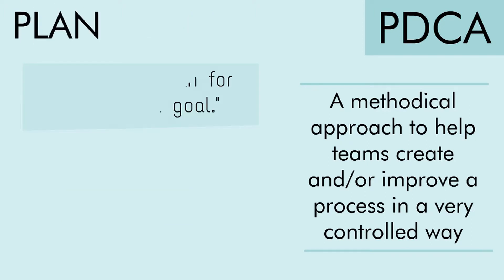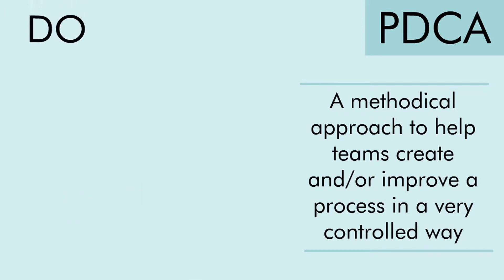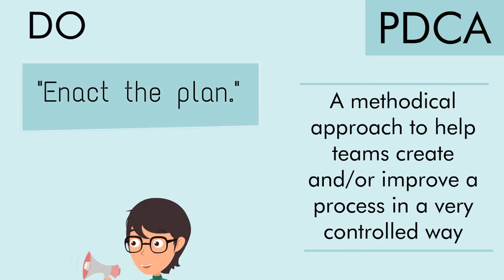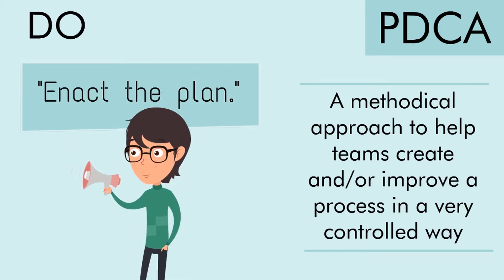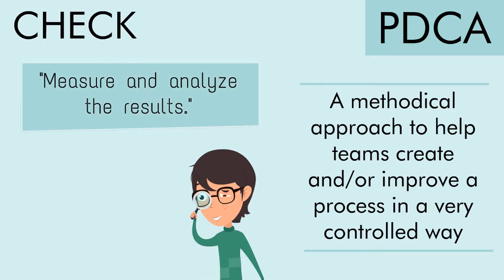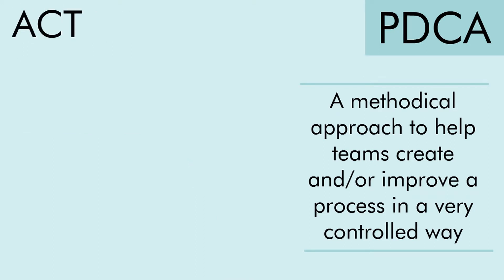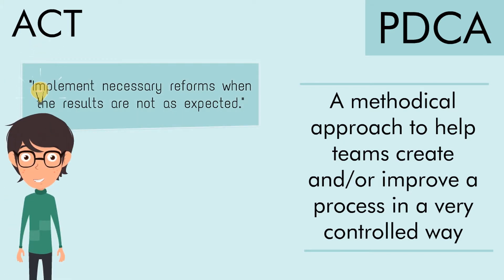Plan: Establish a plan for achieving a goal. Do: Enact the plan. Check: Measure and analyze the results. Act: Implement necessary reforms when the results are not as expected.